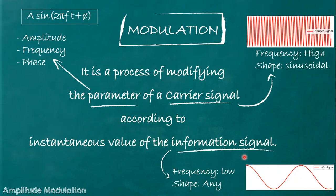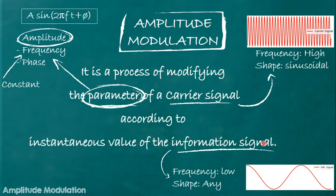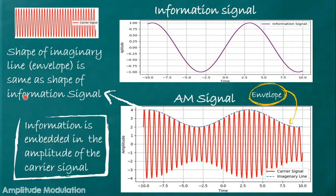The information signal is generally a low frequency signal having any shape. Here a low frequency signal is shown having a sinusoidal shape. In the case of amplitude modulation, amplitude is selected as the parameter of the carrier signal which is made to vary according to the instantaneous value of the information signal.